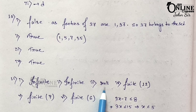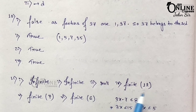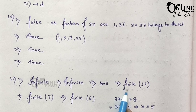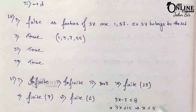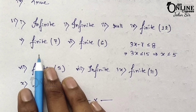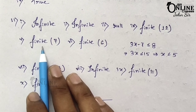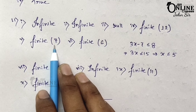Number 4: x such that x belongs to N and x is a factor of 84. A factor of 84 — find all factors of 84. Since 84 has a fixed number of factors, it's a finite set. The cardinal number is 12.